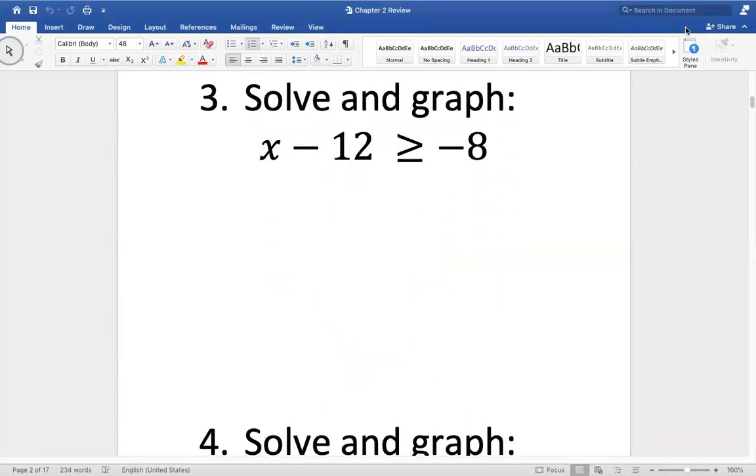Solving graph. We're going to get rid of this minus 12. We're going to add it. X is greater than or equal to negative eight plus 12 is four. So three, four, five, close circle. We're eating the X, so we're shading to the right.